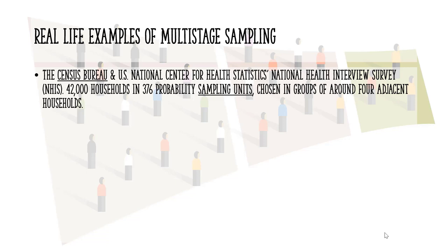Here are a few real-life examples. The Census Bureau uses multi-stage sampling for the US National Center for Health Statistics National Health Interview Survey. A sample of 42,000 households in 376 PSUs — a PSU is a probability sampling unit, usually a county or groups of counties — which are chosen in groups of around four adjacent households.